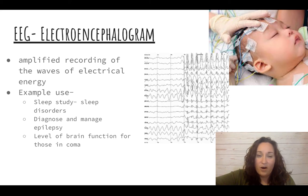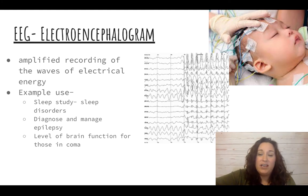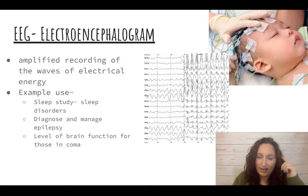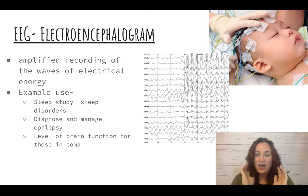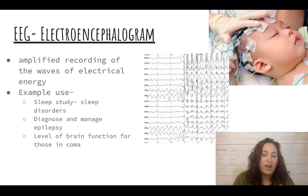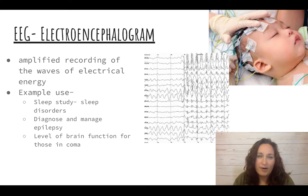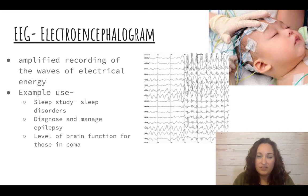Now we have a whole bunch of brain imaging tools that we use. The first we're going to talk about is the EEG. The EEG looks like — as on this baby — where they have all the little electrodes around his head, and those are going to record brain waves. Those brain waves are often studied over time to understand consciousness, so sleep studies commonly use EEG.